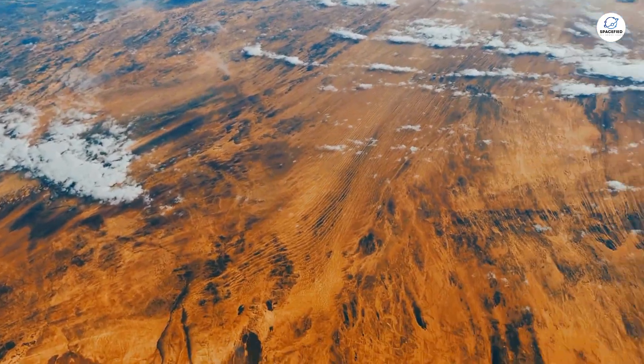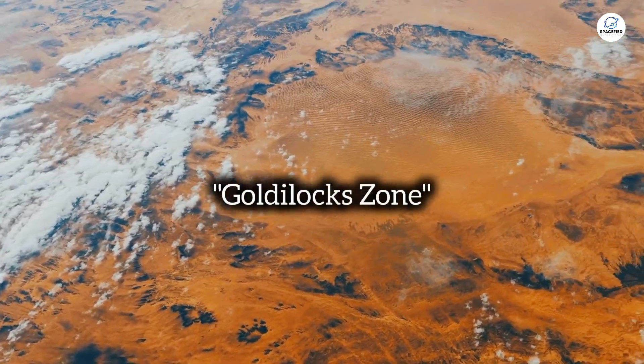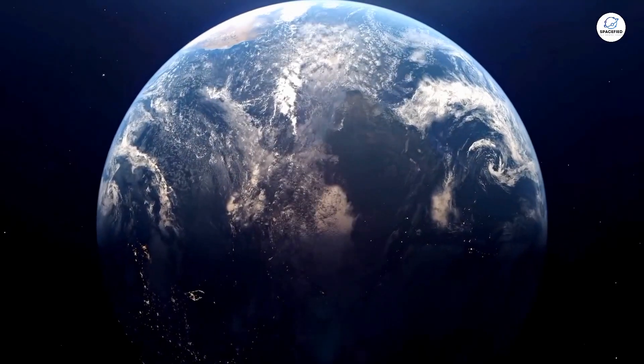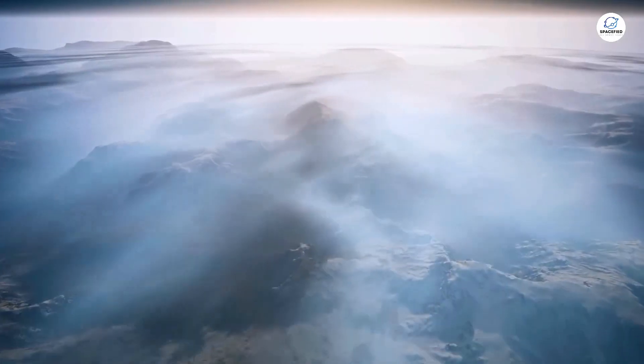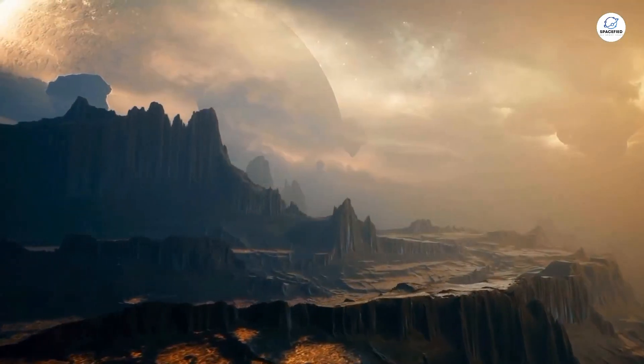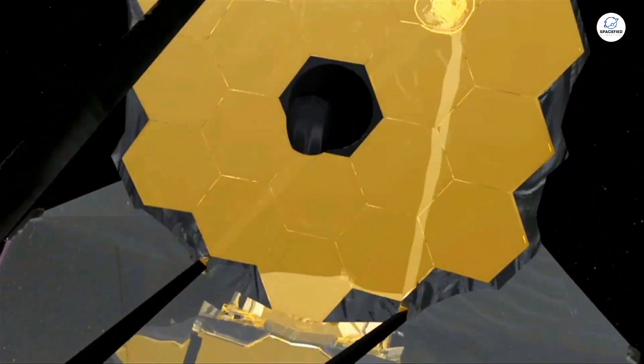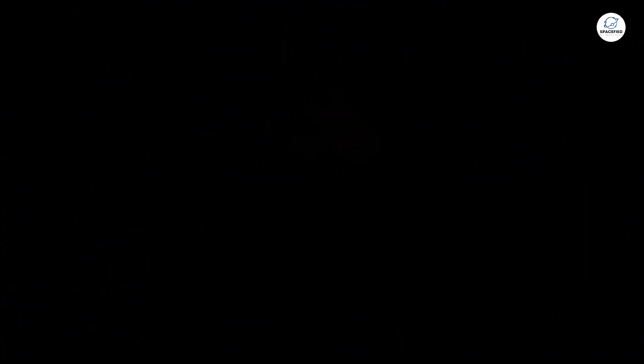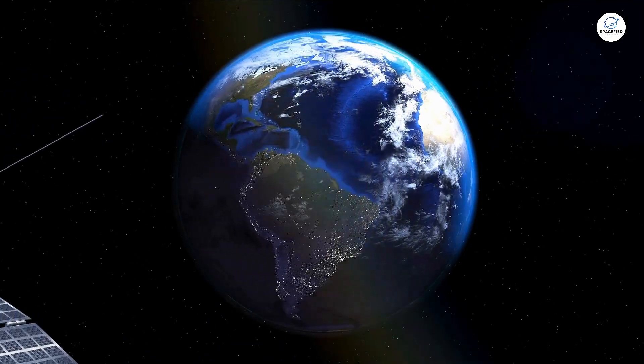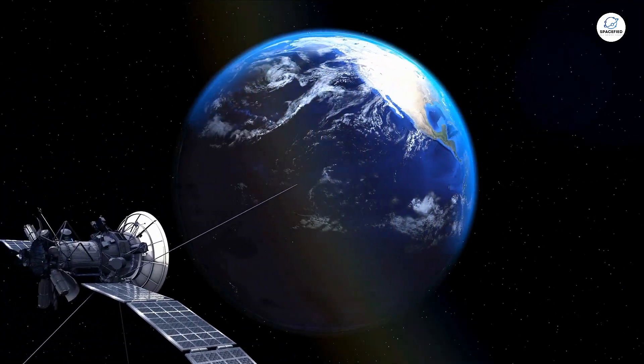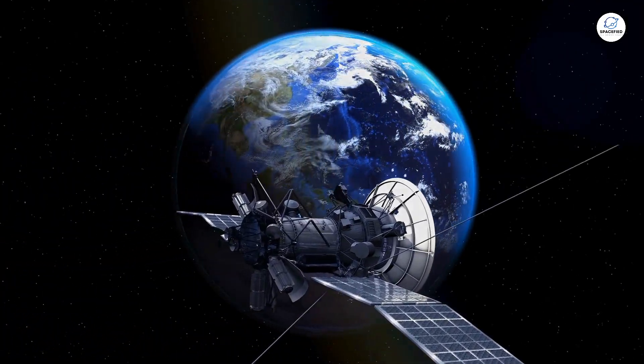This planet orbits its star in what scientists call the Goldilocks Zone, a region where conditions are just right for liquid water to exist, making it a prime candidate for hosting life. Discovered through the powerful lens of the James Webb Space Telescope, Gliese 581g might not only be habitable, but could potentially be more suited for life than Earth.